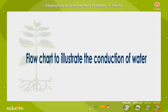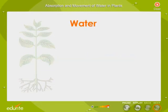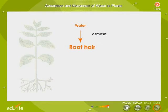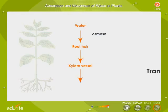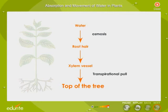Now let's have a look at the flow chart to illustrate the conduction of water. By osmosis, water enters the xylem vessels through the root hairs. The water is conducted to all the parts of the plant